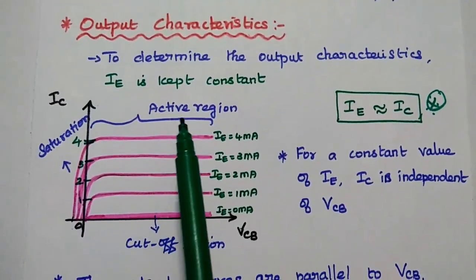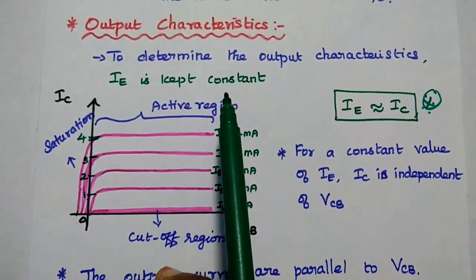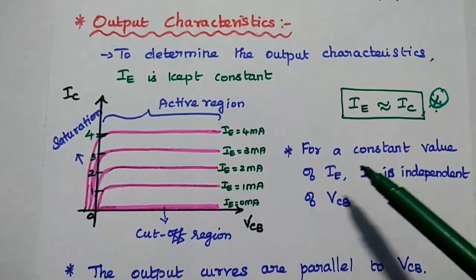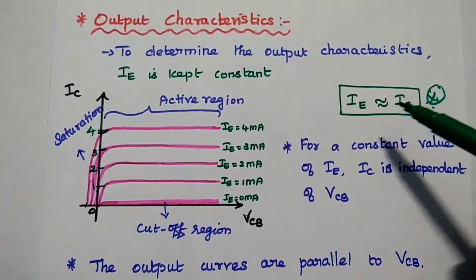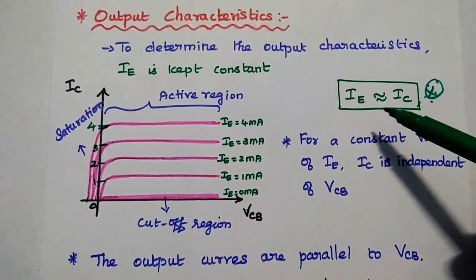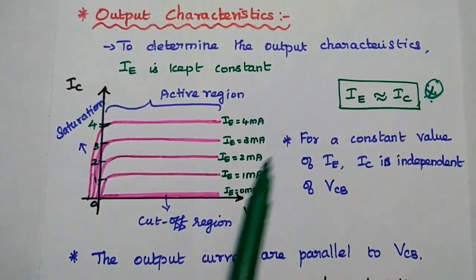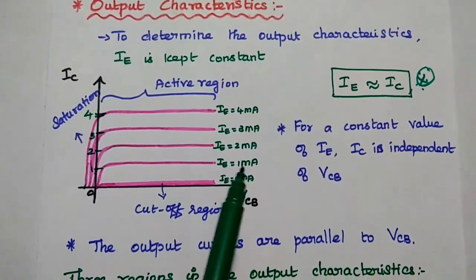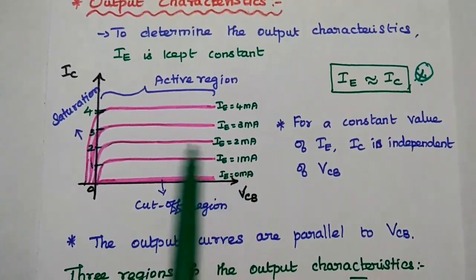Next is output characteristics. To determine the output characteristics, the input current — that is the emitter current — is kept constant at a proper value by adjusting the input voltage. In a BJT, the output current depends on and is controlled by the input current, so these two are directly proportional. For a constant value of emitter current, the output current IC is independent of the output voltage. If IE equals 1 then IC is also 1; if IE equals 2 then IC is also 2.